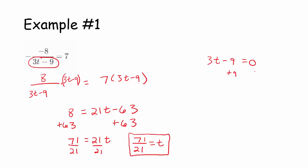Add 9 to both sides, we get 3t equals 9, and divide both sides by 3. So, really, t being equal to 3, that's the only value that would make the left-hand side undefined.